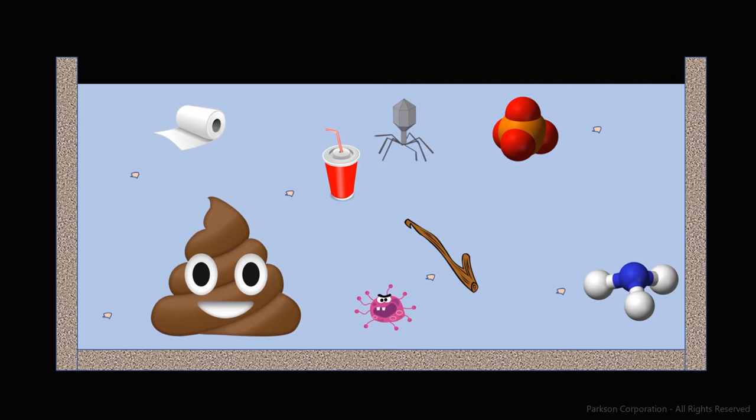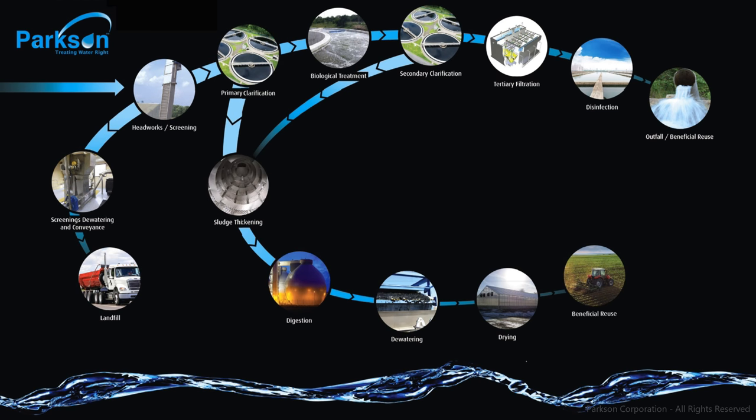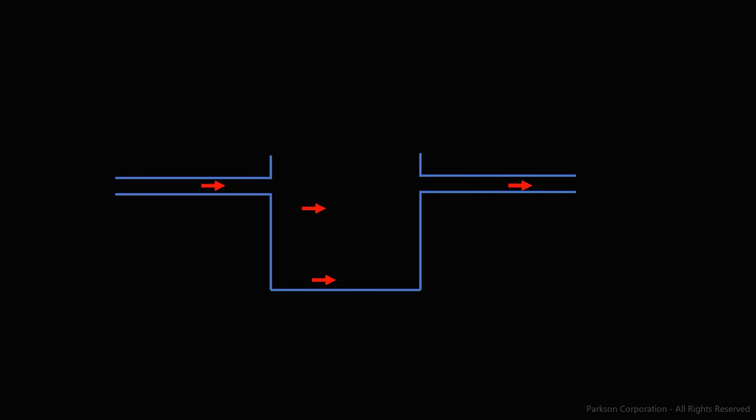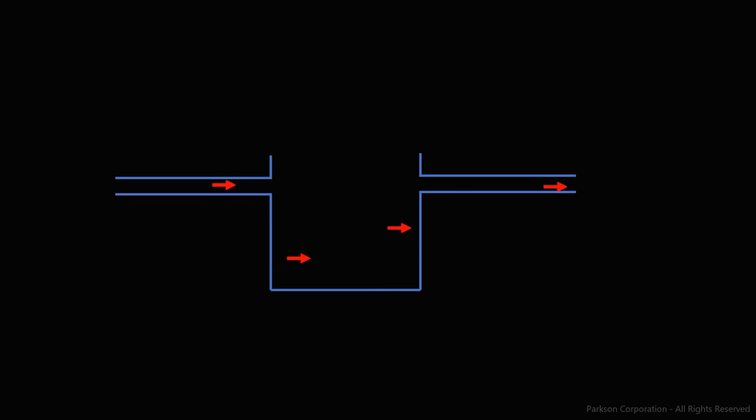Looking back at our treatment schematic, one thing you notice is that it flows. The majority of these processes are what are known as continuous systems, so they do their thing while the flow is moving through them, as opposed to batch systems, in which the process would occur in a static fashion.